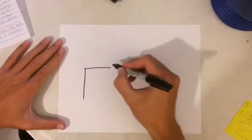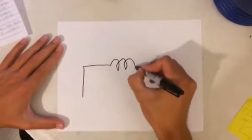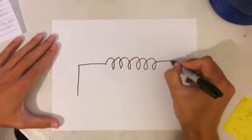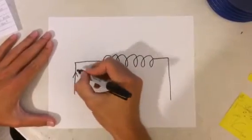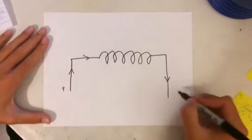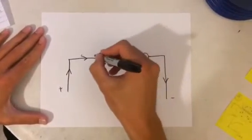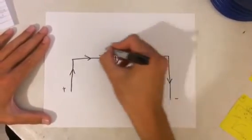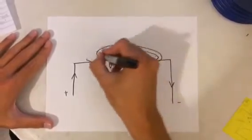When current begins to flow through an inductor, this will symbolize current flowing, a magnetic field will expand, like I said before.